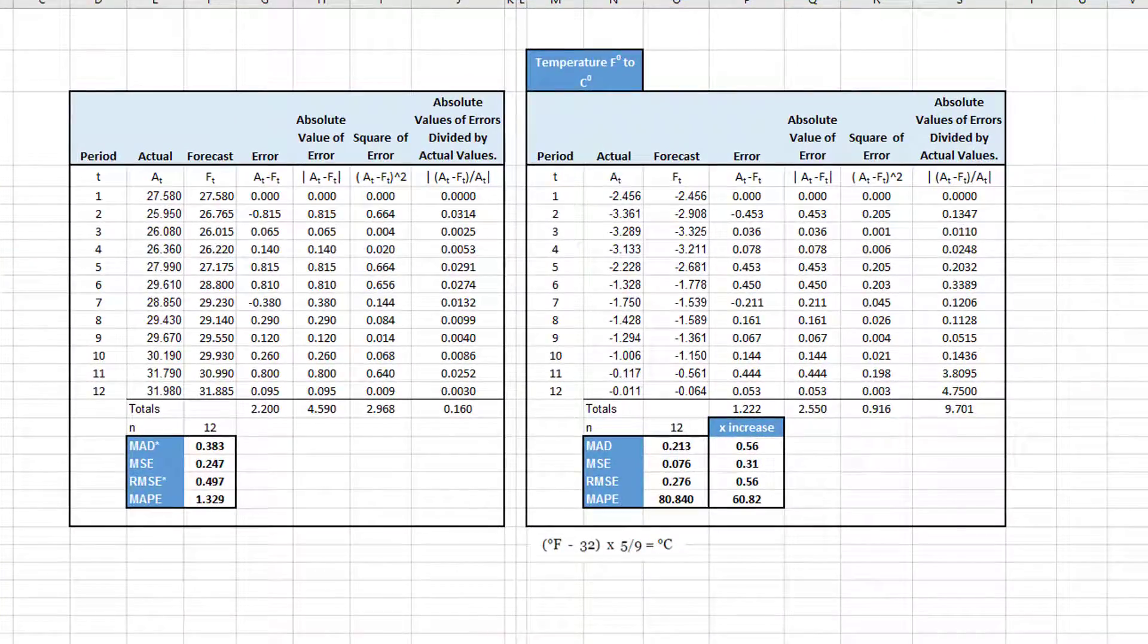And MAPE has another important weakness since you are dividing by the actual value. If the actual value gets very small, MAPE becomes unstable in that it grows very large very quickly. Look at these 11th and 12th periods here in the Celsius table. They've gotten very small, minus 0.1 down to minus 0.01. And you can see that our MAPE, our absolute value of the errors divided by the actual values, jumps from one-tenth to 3.8 to 4.75. A big jump as this actual value gets small.